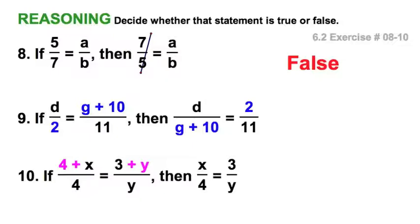On number 9: if d is to 2 as g plus 10 is to 11, then d is to g plus 10 as 2 is to 11. Wow, I can't even say that. But clearly here, all we did was switch these two. We switched the means, and we know that that's okay. We can interchange the means, and that proportion holds.